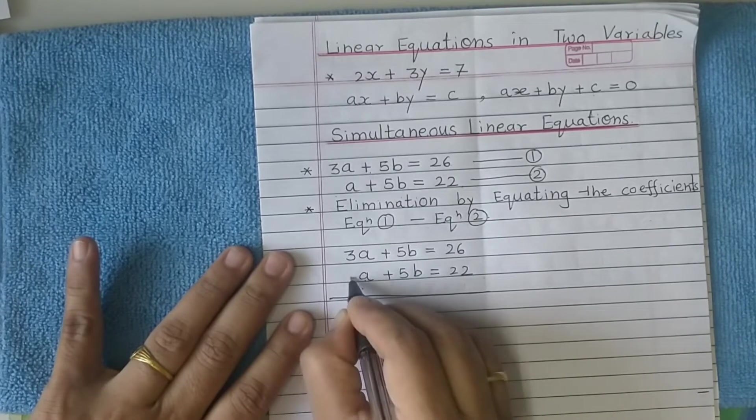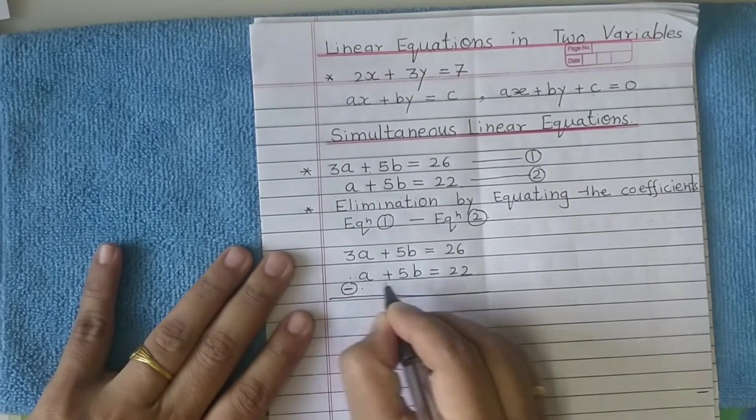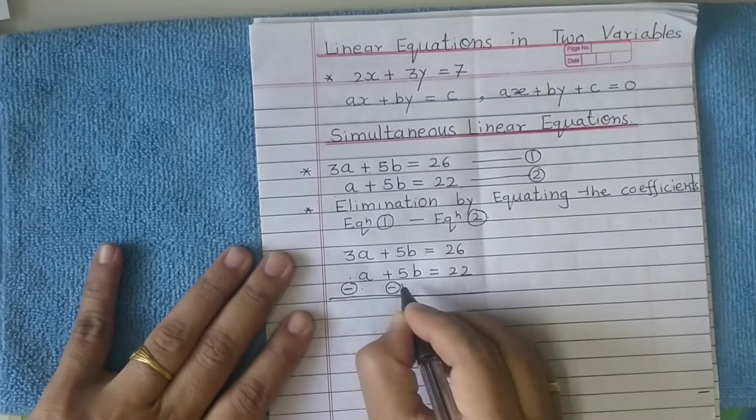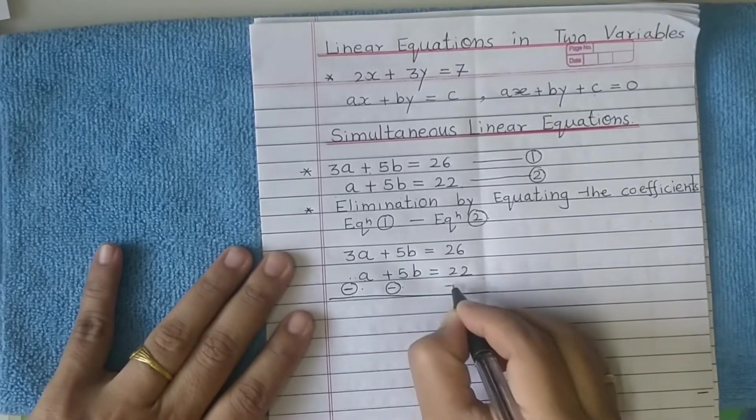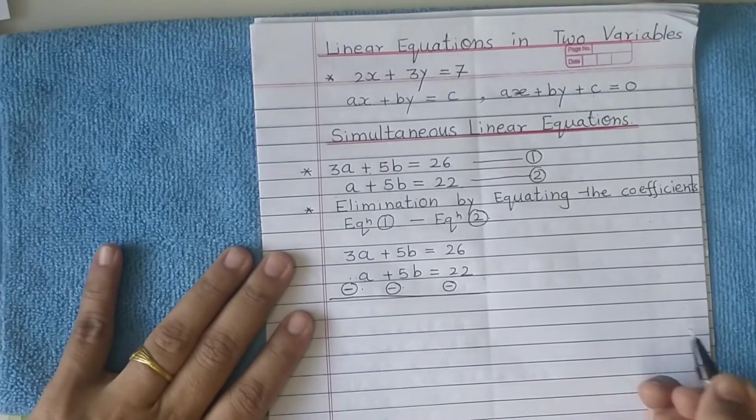So here a has no sign, meaning plus, so make it minus. This plus sign will also become minus. No sign again, so consider it positive which becomes negative. Now work out: 3a minus a is 2a, plus minus 5b gets cancelled, eliminated. 26 minus 22 is 4.